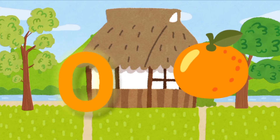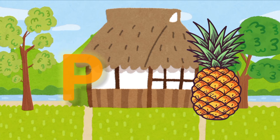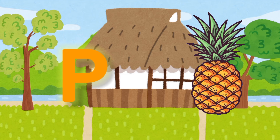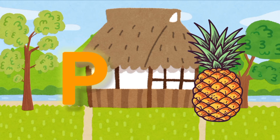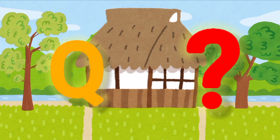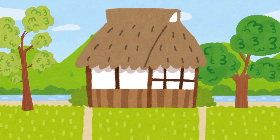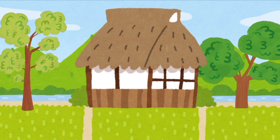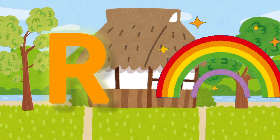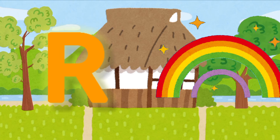O is for Orange. P is for Pineapple. Q is for Question Mark. R is for Rainbow.